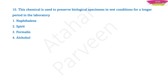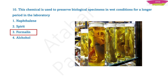Question number ten: this chemical is used to preserve biological specimens in wet conditions for a longer period in the laboratory. Which chemical do we use? It is formalin. You must remember from PUC biology lab — we used to see bottles wherein biological specimens were stored in a liquid, and that liquid is formalin.